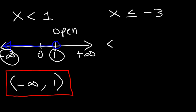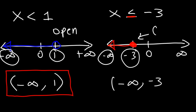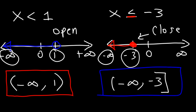For x is less than or equal to negative 3, negative 3 is the point of interest. We use a closed circle and shade to the left. Reading the graph from left to right, the shaded region starts at negative infinity and stops at negative 3. Because it includes negative 3, we use a bracket symbol, giving us (−∞, −3].